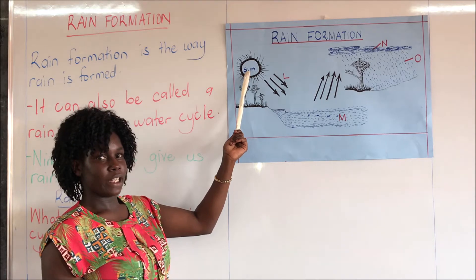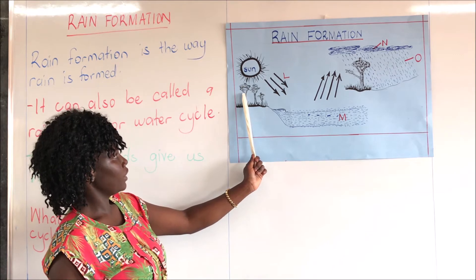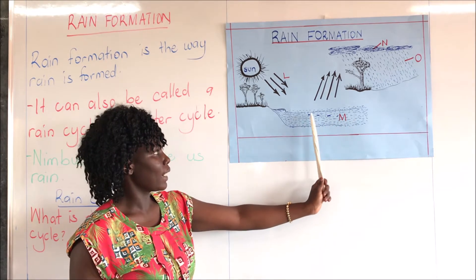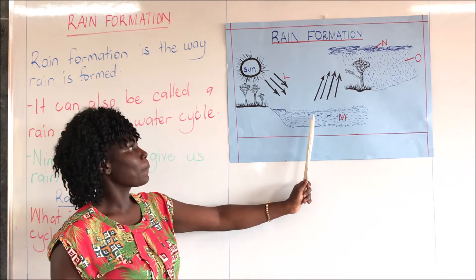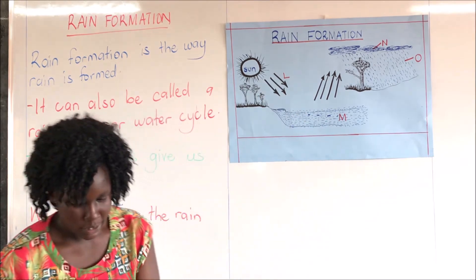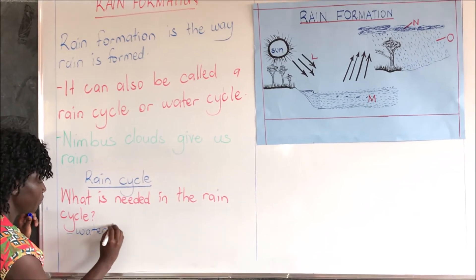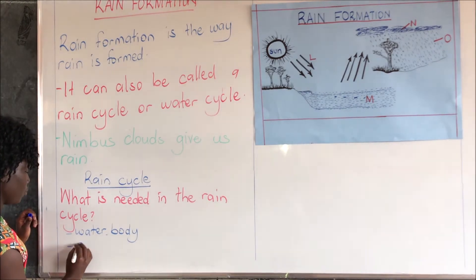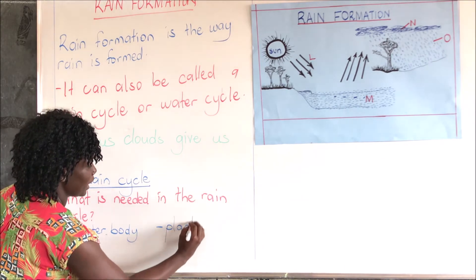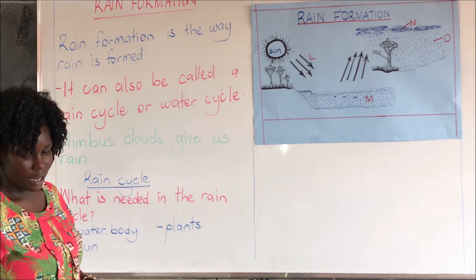We need the sun. Then we have the plants. Then we have a water body, represented with a blue marker. Up here we have something being formed. So what is needed? Number one, we need the water body. Number two, we need the sun. And number three, we need the plants. In the rain cycle, the water body is needed, the sun is needed, and the plants are needed.